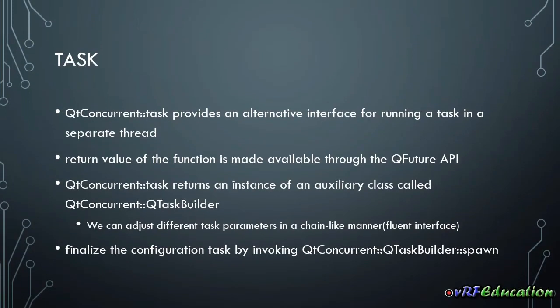Hi, this is Vanit from the VR of Education channel. Welcome to another session of how to do things in Qt framework. Today we are going to talk about the task method inside the Qt Concurrent framework. This method provides an alternative interface for running a task in a separate thread. The return value of the function is made available through the QFuture API. If you just want to run a function in a separate thread without adjusting any parameters, you can use Qt Concurrent's run method, as that lets you write less code.